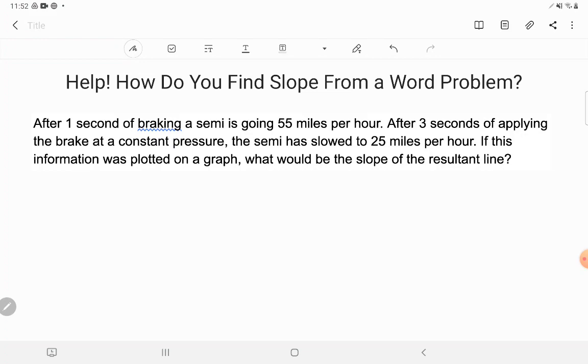Okay, so first of all, what are they asking us to find? They want us to find the slope of the resultant line, the slope of the line if we were to plot this on a graph. Now there's a couple different ways I could go about this, so I don't want to treat it like there's one right way. The way we find slope is different based on what we're looking at.